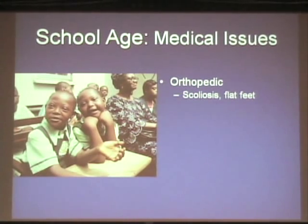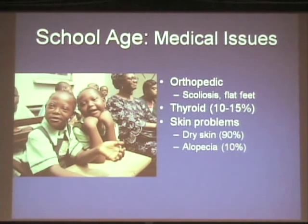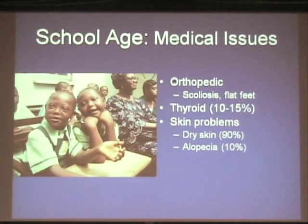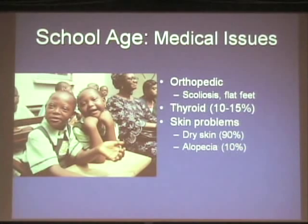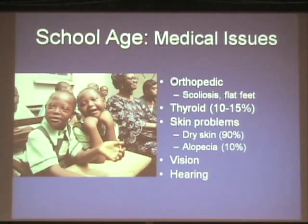For school-age children, we continue monitoring for scoliosis and other orthopedic issues, still check thyroid annually, still deal with dry skin. Children with Down syndrome have a higher chance of various autoimmune disorders — including conditions that can attack hair follicles, causing hair to fall out in a condition called alopecia, which can affect all body hair and tends to recur. We continue monitoring vision and hearing.